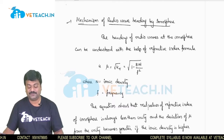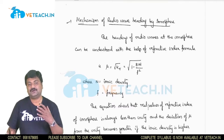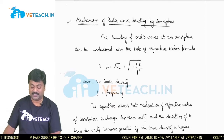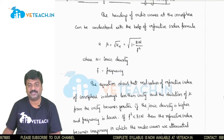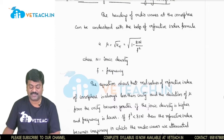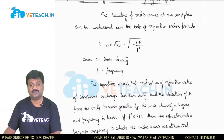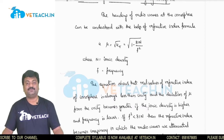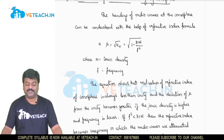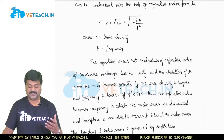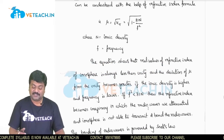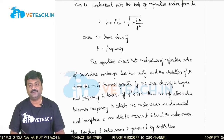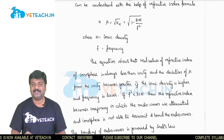The bending of radio waves in the ionosphere is understood in terms of the radio refractive index formula: mu equal to square root of kr, which equals square root of 1 minus 81n divided by f-squared, where n defines the ionic density and f defines the frequency. This equation shows that the refractive index of the ionosphere is always less than unity.